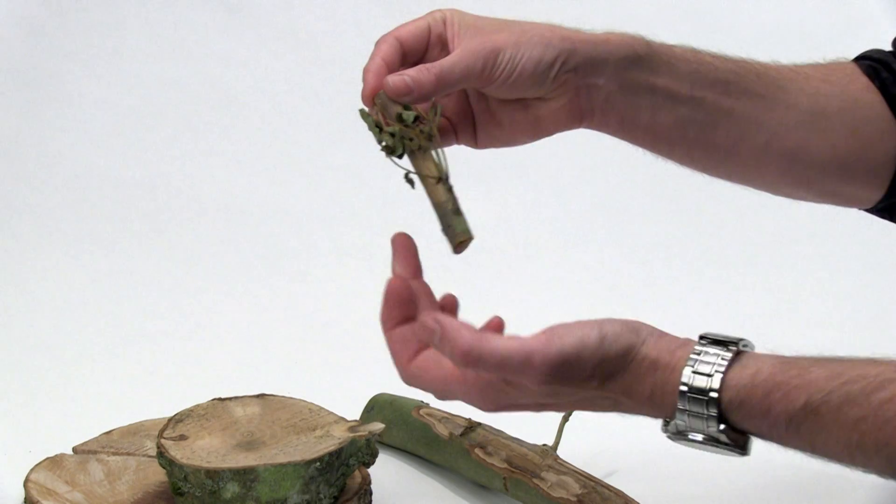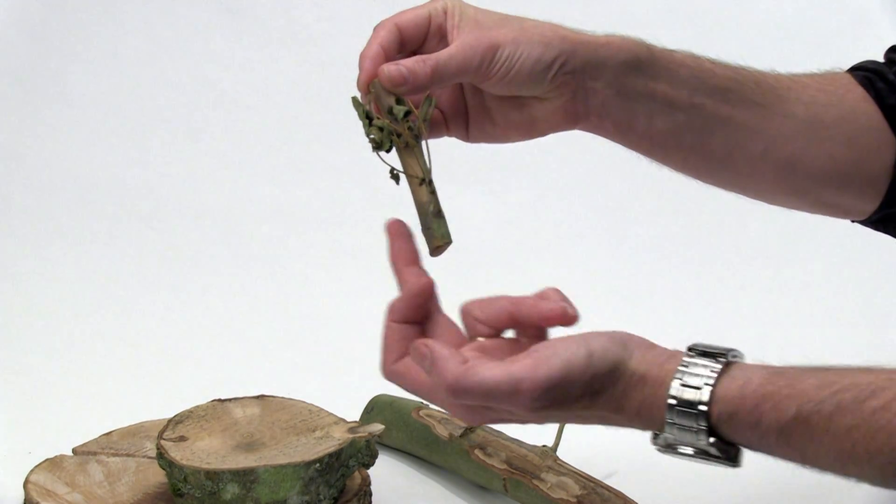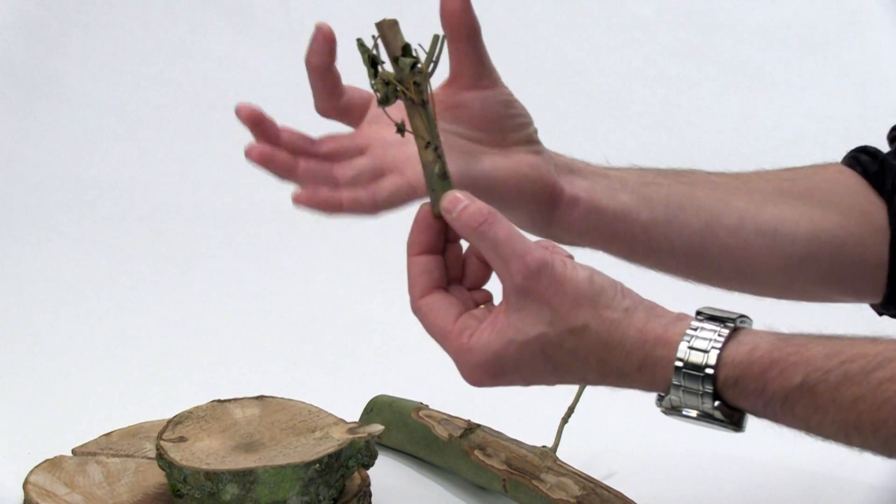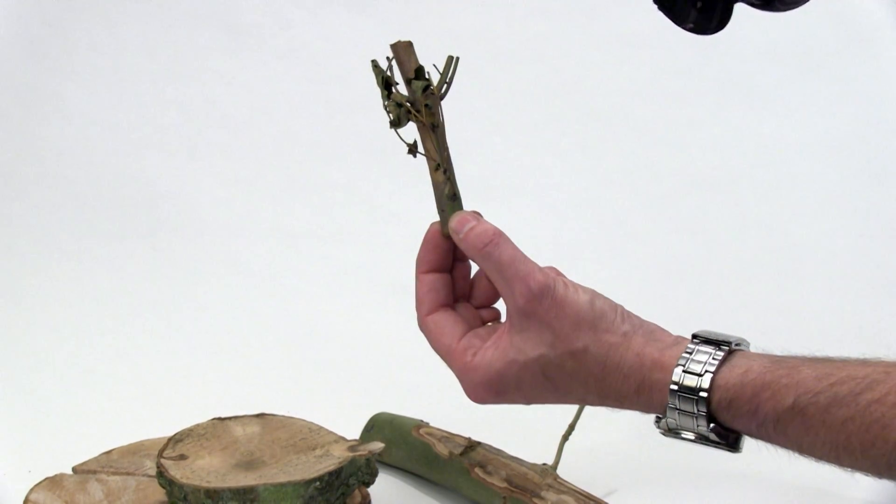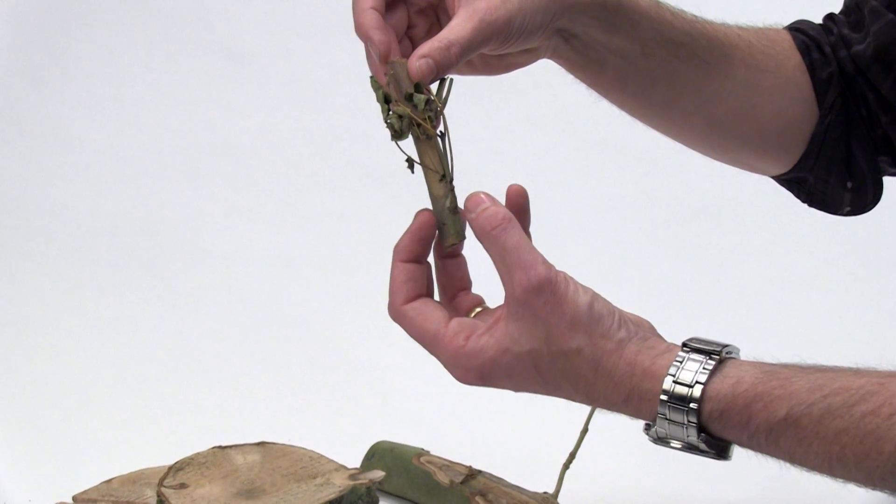Now as these cankers girdle the sapling, girdle the tree itself, nutrient and water is lost from above it. And so what you'll often see is necrosis, wilting above the point where the canker has formed.